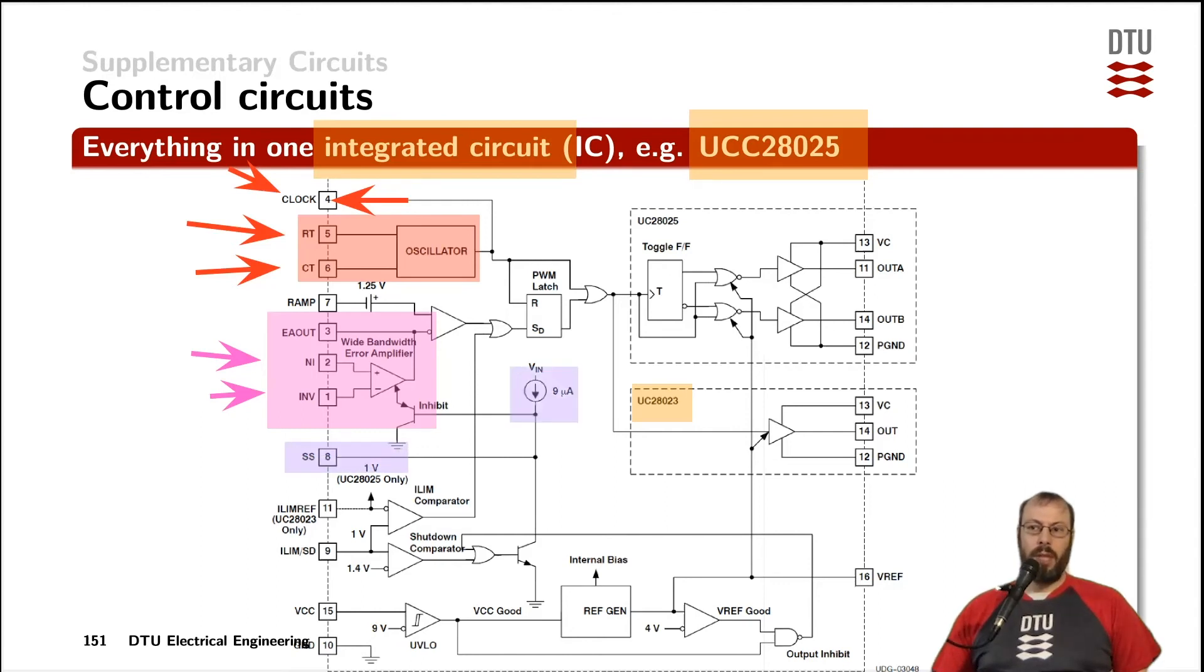Furthermore the device contains a soft start capability. That means the 9 microamp current source is charging an externally connected capacitor out here and depending on the size of the capacitor the voltage on this node here rises faster or slower and the slower it rises the slower the duty cycle ramps up to its steady state.